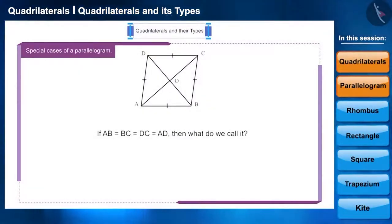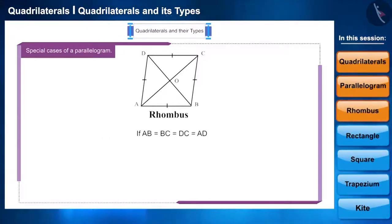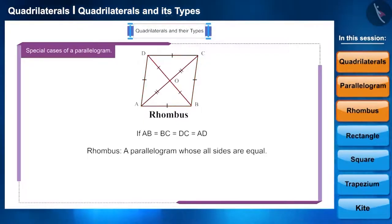Yes, these types of parallelograms are called rhombus. Because a rhombus is a parallelogram whose all sides are equal, its two diagonals bisect each other vertically.